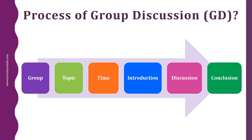The GD ends in either of two ways: first, the panel may abruptly stop the GD and announce the end of the process; or second, they may ask a participant to summarize the GD. If you are asked to summarize, remember that your summary cannot include anything that was not discussed during the GD. The summary must be an objective analysis of the important points brought up during the discussion — this is the conclusion.